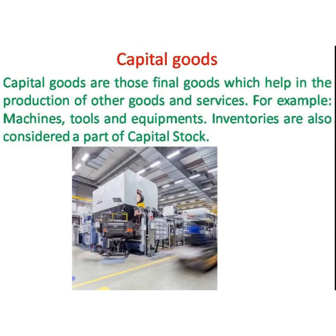Capital goods are those final goods which help in the production of other goods and services. For example, machines, tools, and equipment used for the further production of commodities. Inventories — that is, stock of goods — are also considered a part of capital stock.